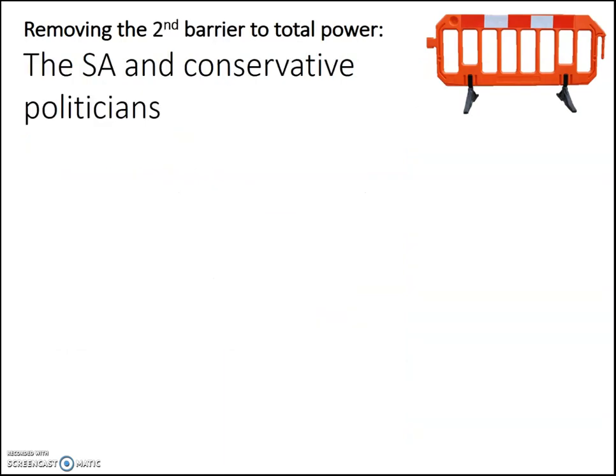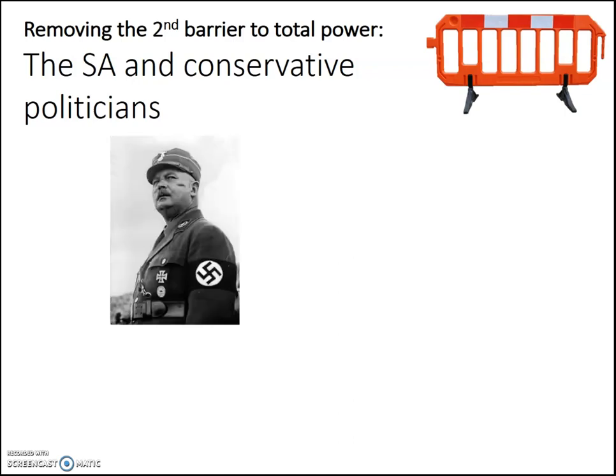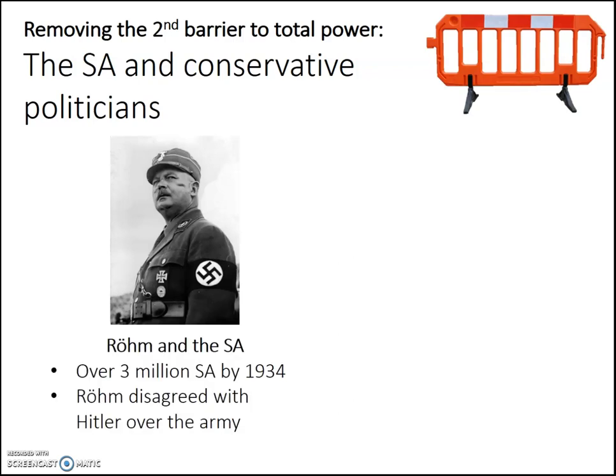The second barrier was probably the biggest to him having total power. There were two real problems — two potential forms of opposition: the SA and the Conservative politicians. The SA might seem strange to call potential opposition, but it was. This man, Ernst Rohm, ran the SA — the Nazis' army. Rohm and the SA were a real force to be reckoned with, and by 1934 there were over 3 million brownshirts, or SA soldiers, in Germany.